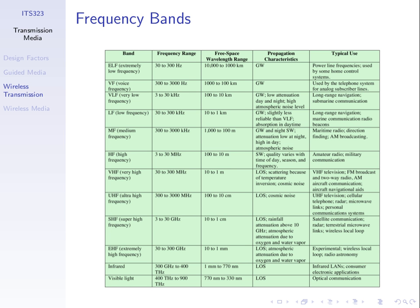You don't need to memorise the individual frequencies or band names. We're just giving examples. For instance, if given this table in the exam, you may be asked: what's an advantage of ground wave versus line-of-sight? Ground wave lets you transmit further around the Earth; line-of-sight is restricted by whether the receiver can see the transmitter.